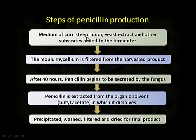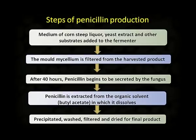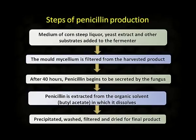Let us discuss the steps of production of penicillin by fermentation process. The fermentation process requires the culture, the microbe, and the raw material. The raw materials are corn steep liquor, which is a major carbon source, and yeast extract for nitrogen source, and some nutrients added to the fermenter. The mold mycelium is filtered from the harvested product. After 40 hours, penicillin begins to be secreted by the fungus. Penicillin is then extracted from the organic solvent butyl acetate in which it is dissolved. Finally, we precipitate the product, wash, filter, and dry it for the final product.